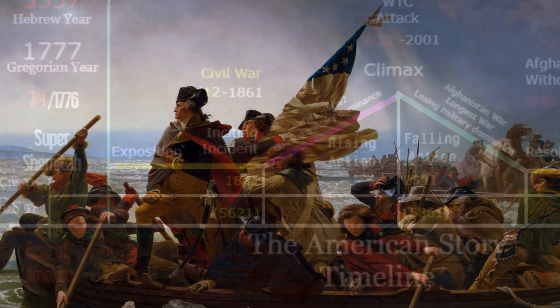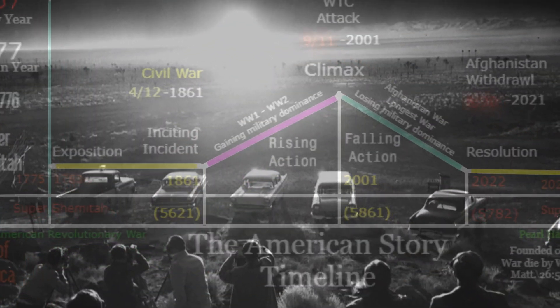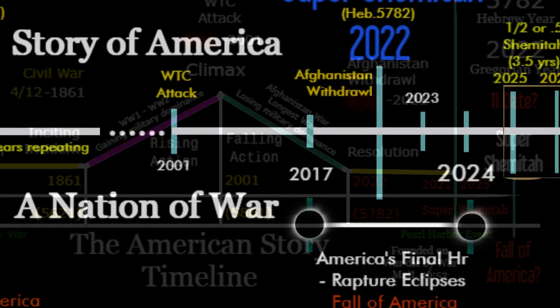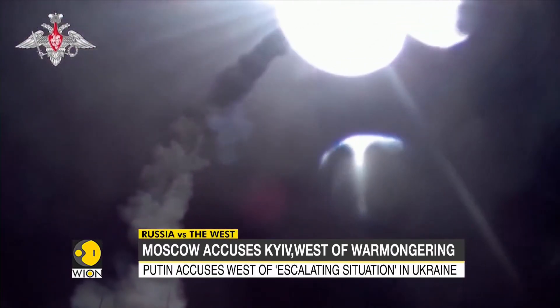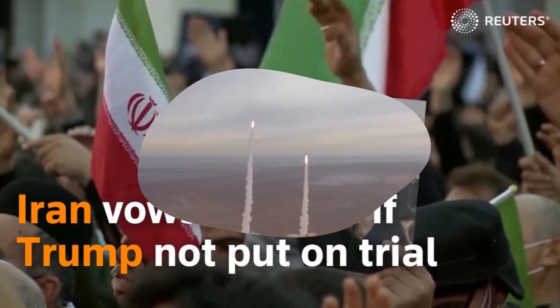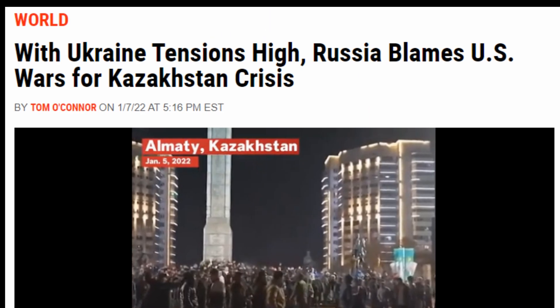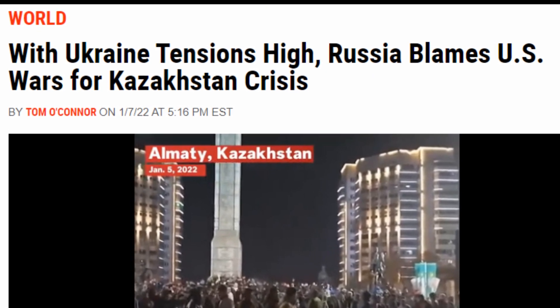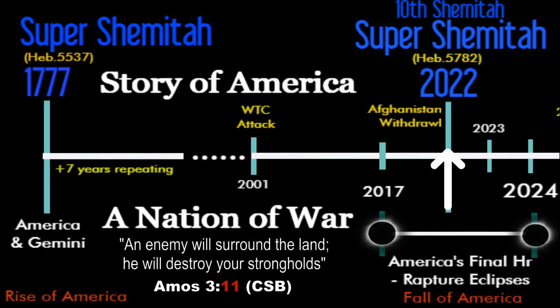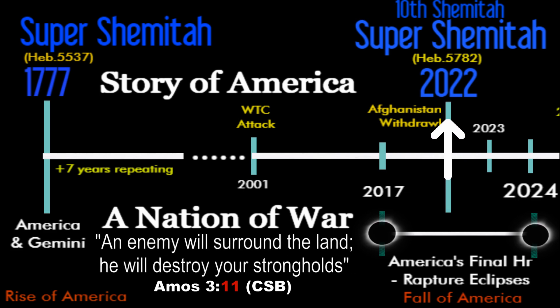America was founded on war and rose to military dominance because of it, which is why the fall of America will also come by war. We're seeing right now tension between America and Russia, America and China, America and Iran — global escalation that doesn't appear to be slowing down. This is why the final Super Shemitah of 5782 is very significant.